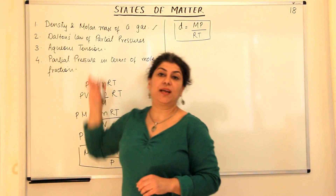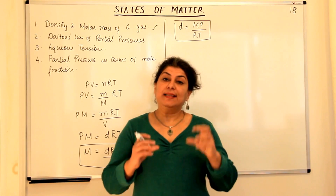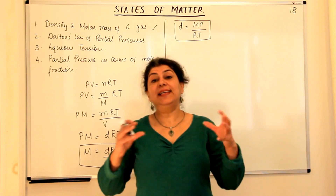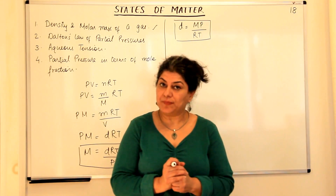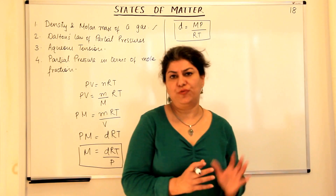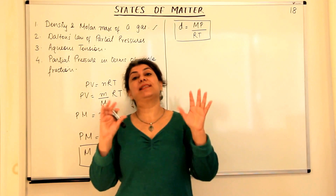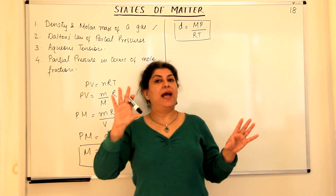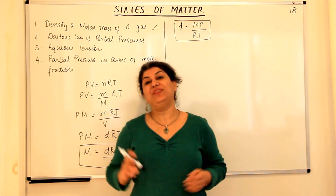John Dalton in 1801 said that the total pressure exerted by a mixture of non-reactive gases is equal to the sum of the partial pressures of each gas. If you have a mixture of two gases in a gas jar and these two gases do not react with each other to form a product, they would behave as if they were individual gases. Whatever pressure gas A would exert, it still exerts the same pressure, and when you add gas B, gas B exerts its own pressure and the total pressure is the sum of these two.